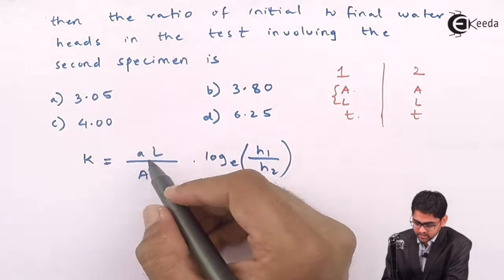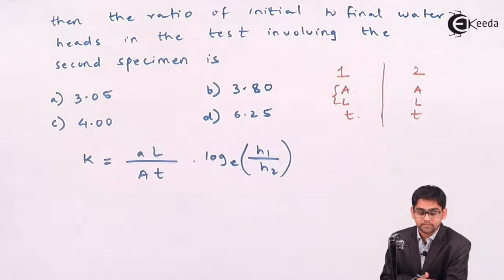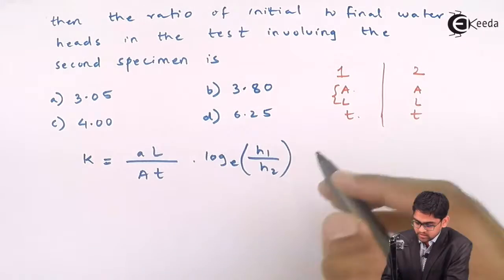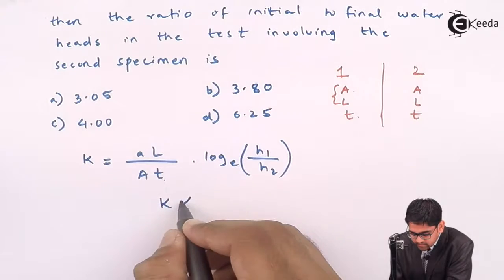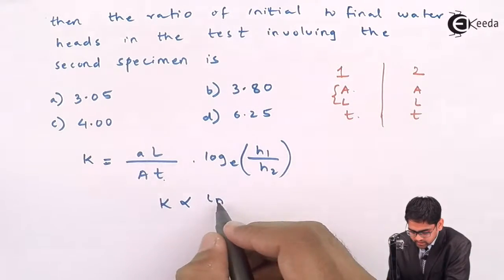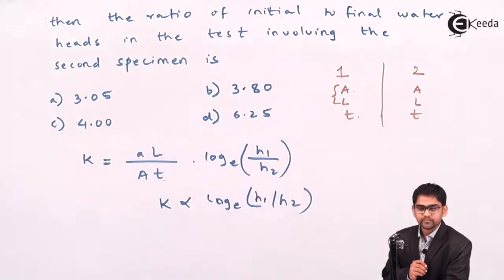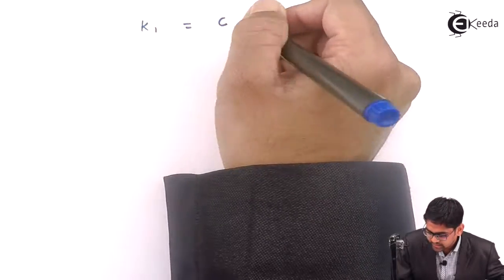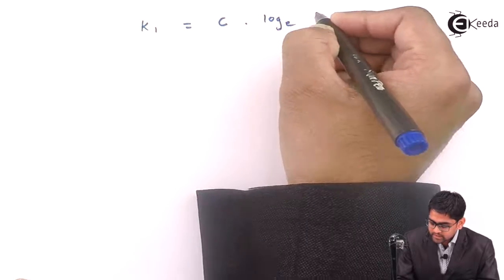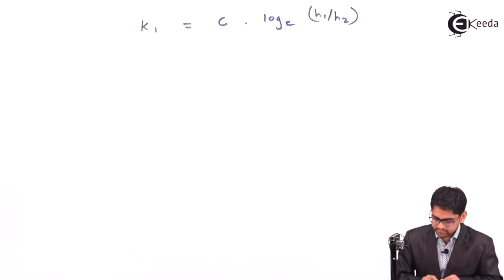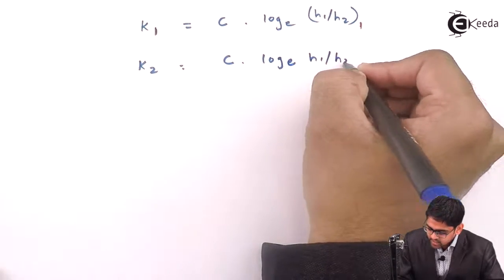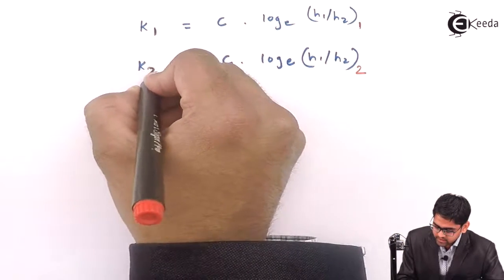Since the same permeability equipment is used, the standpipe area a also remains constant. With a, L, A, and t all constant, k becomes directly proportional to ln(h1/h2). So for the first specimen: k1 = C·ln(h1/h2)₁, and for the second specimen: k2 = C·ln(h1/h2)₂.